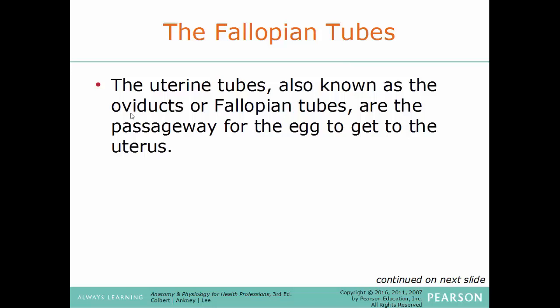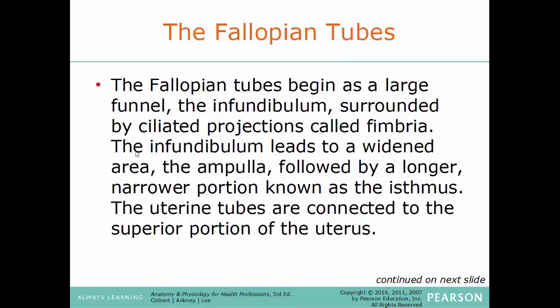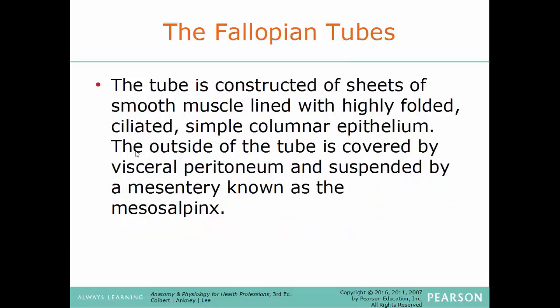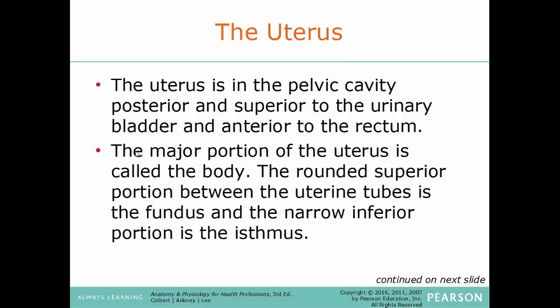The fallopian tubes — also known as uterine tubes or oviducts — are the passageway for the egg to reach the uterus. They begin as a large upside-down funnel structure called the infundibulum, surrounded by ciliated projections called fimbriae. The infundibulum leads to a widened area called the ampulla, followed by the more narrow isthmus, and the tubes connect to the superior portion of the uterus. The fallopian tube is made up of smooth muscle lined with highly folded ciliated simple columnar epithelium, covered by visceral peritoneum, and suspended by a mesentery known as the mesosalpinx.